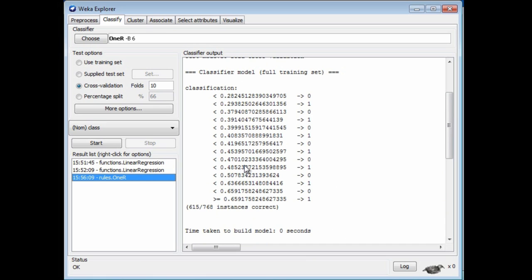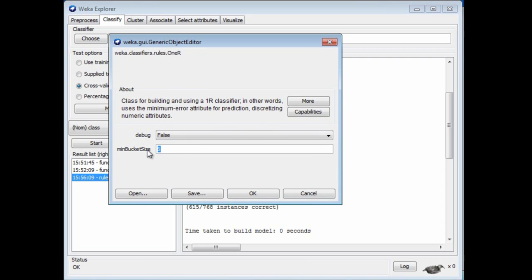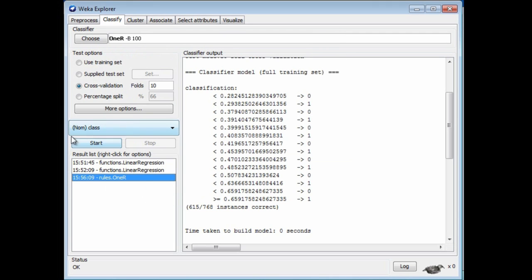We want a single split point. If it's less than this, then predict 0, otherwise predict 1. We can get around that by changing this B parameter, the bucket size parameter, something much larger. I'm going to change it to 100 here, and run it again.